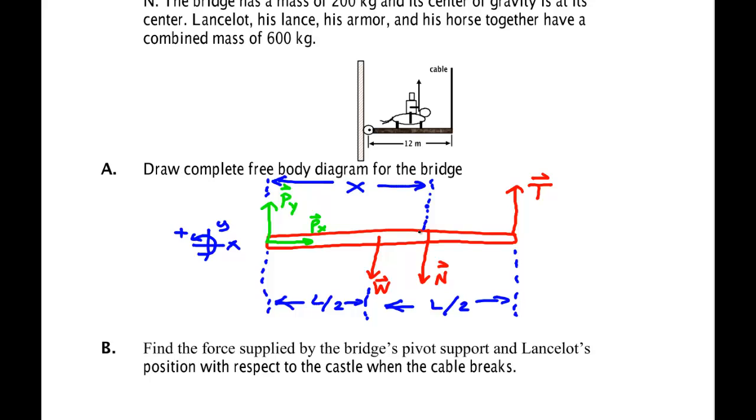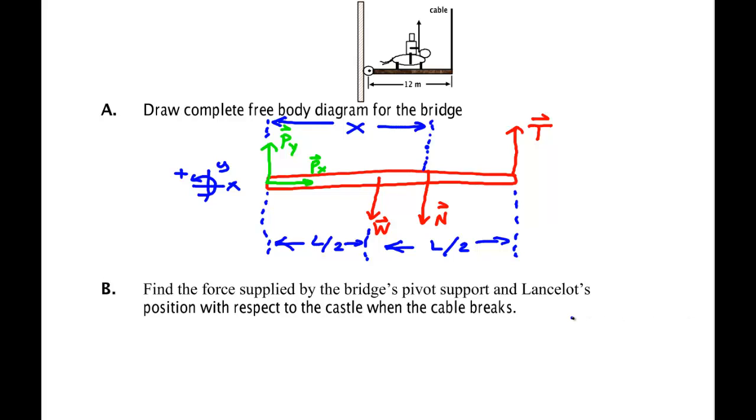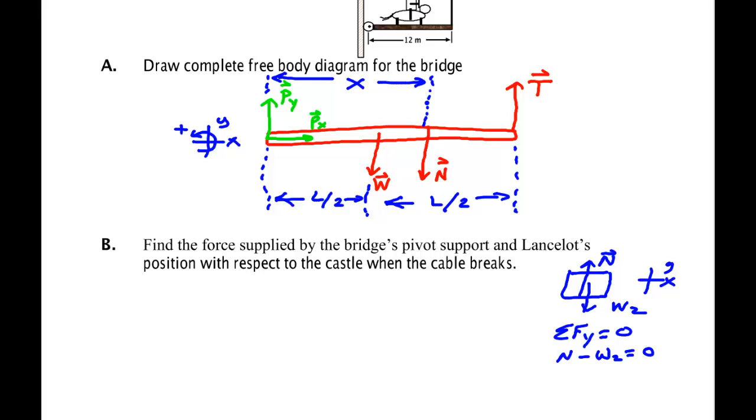Now one of the things, in order to find the normal force, I can probably guess this. It's going to be the weight of Lancelot. You really need to have drawn Lancelot to find that. There's Lancelot, his horse, and his weight. And he has a w2 force, and the bridge is pushing up with the same force that he's pushing down, which is the normal force. The sum of the forces in y is zero, so normal minus the weight of Lancelot, w2, is zero. We find that the normal force is w2, which is m2g. So because I have the mass of Lancelot, his armor, and his horse, I have the normal force that he's applying. So I know n.